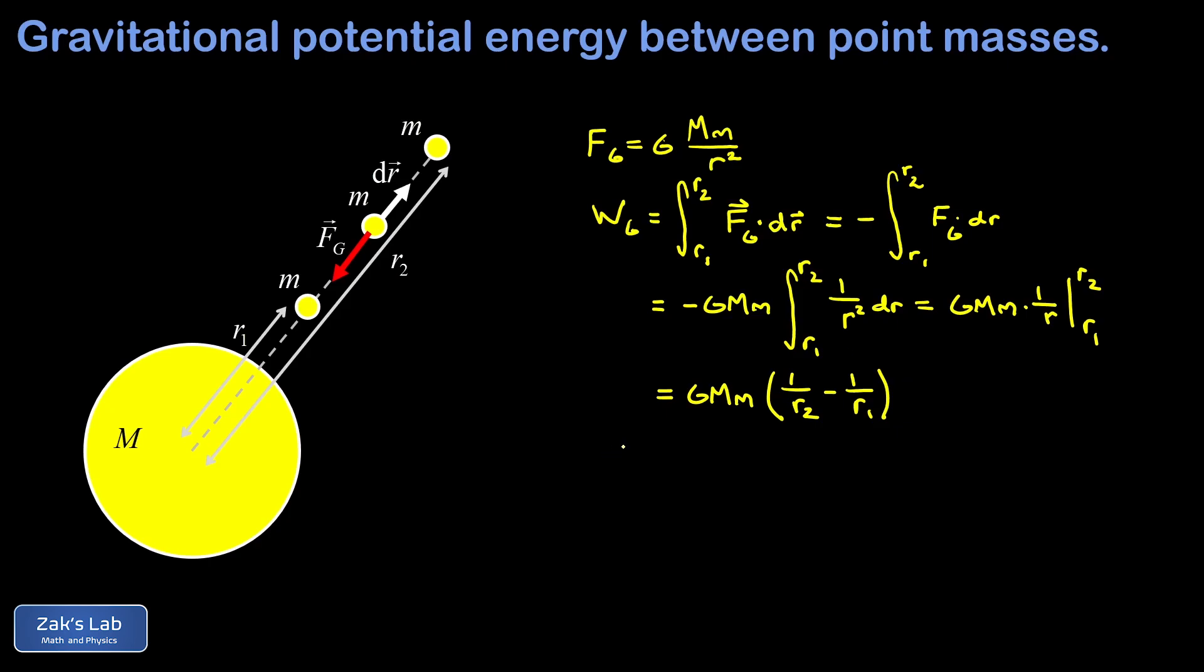So now to relate to a potential energy function, we have to use this fact that the work done by gravity is equal to the negative of the change in a potential energy function. So we have to take this expression that we just derived from the work integral and then look at that as a negative of a change. And when I say a change, I mean a final minus initial value.